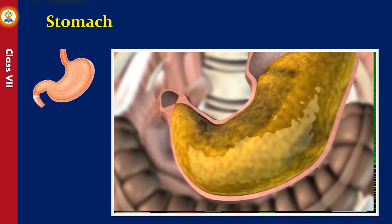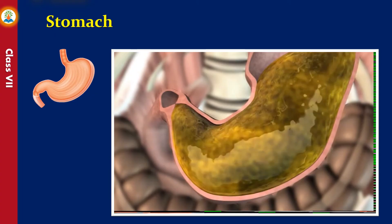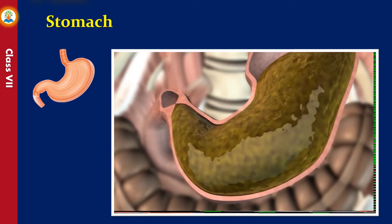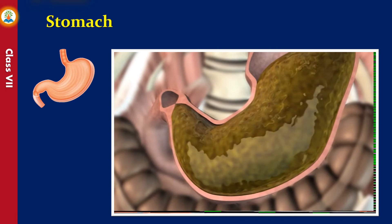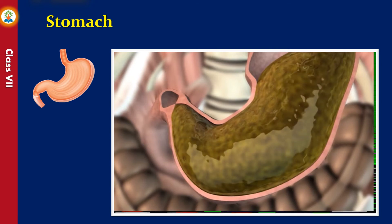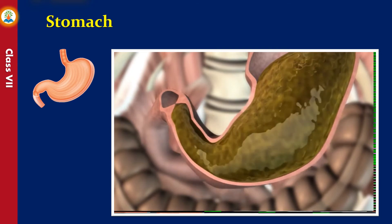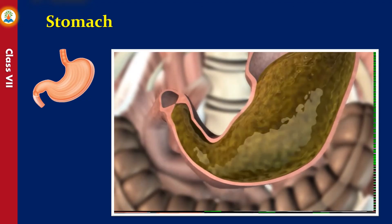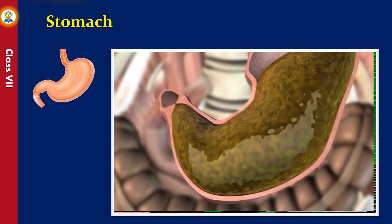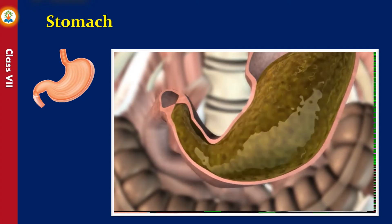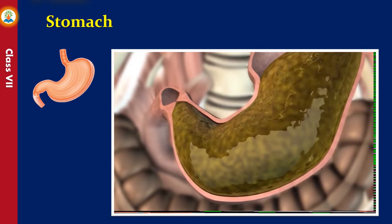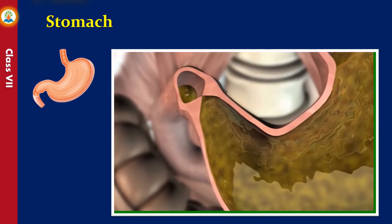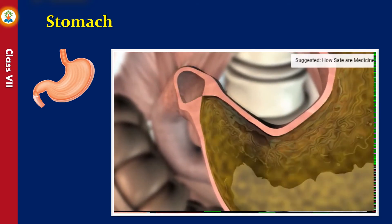Gastric acid eliminates bacteria in the food and prepares it for the following stages of digestion. Muscular contractions of the stomach wall churn the food mass and mix it with gastric juice — three contractions per minute move the food back and forth. After a certain time, the contents of the stomach are adequately broken down and passed in small quantities into the small intestine. As the stomach empties, it gradually returns to its previous size.